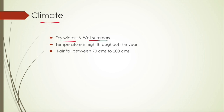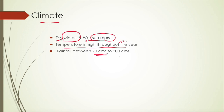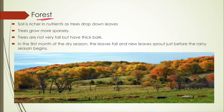The climate here is characterized by dry winters and wet summers — rainfall occurs especially during summer seasons, with no rainfall during winter. The maximum temperature is high throughout the year, a bit higher than in the rainforest. The annual rainfall here is between 70 centimeters and 200 centimeters.